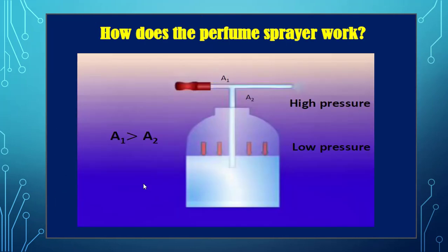By the same way, the perfume sprayer works. The air passes through here by high velocity, pressure decreases. The perfume goes up in this tube because the pressure decreases, and the perfume can go out from here.